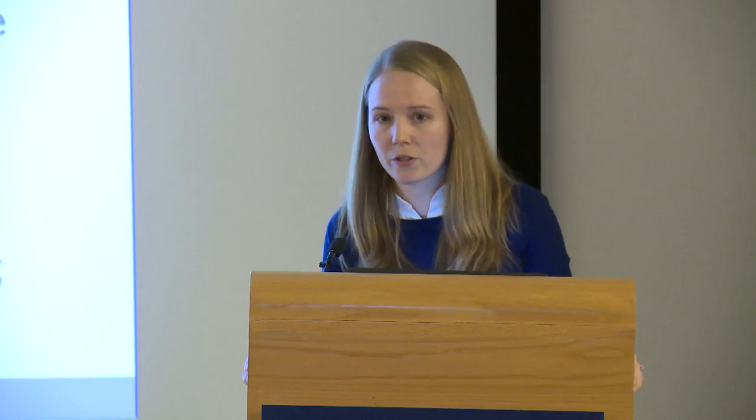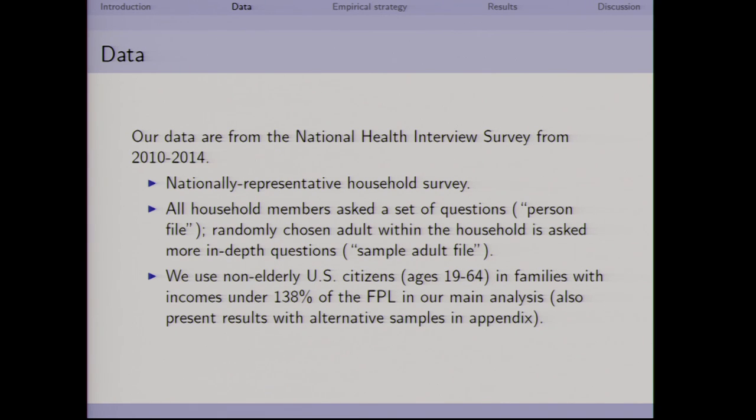The data is from the National Health Interview Survey from 2010 through 2014 — a nationally representative household survey. All household members are asked a small set of questions in the person file, and within each household an adult is selected to receive a more in-depth interview, asked a larger number of questions about their use of health care and their health. We're looking at all non-elderly U.S. adult citizens between ages 19 and 64 with family incomes under 138% of the federal poverty level in our main analysis, with a thick appendix checking sensitivity to sample and model specification.